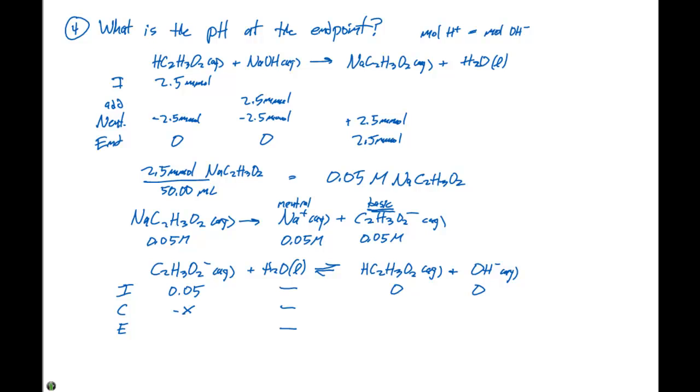As this equilibrium establishes itself, the change in concentration is going to be -x for the acetate ion, +x for the acetic acid, and +x for the OH-. That gives us 0.05-x, x, and x for our equilibrium concentrations.